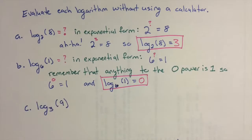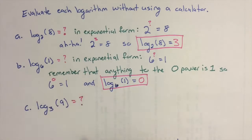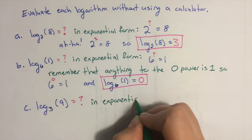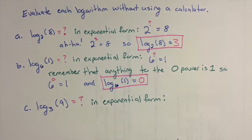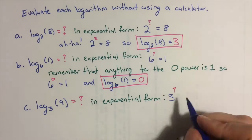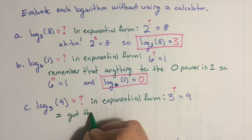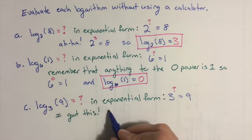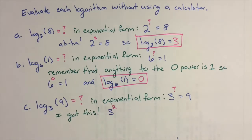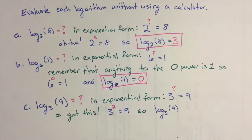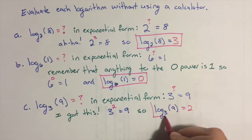Next up, log base 3 of 9 equals what? In exponential form, this is 3 to the what equals 9. I got this one too — 3 squared is 9, so log base 3 of 9 must be equal to 2.